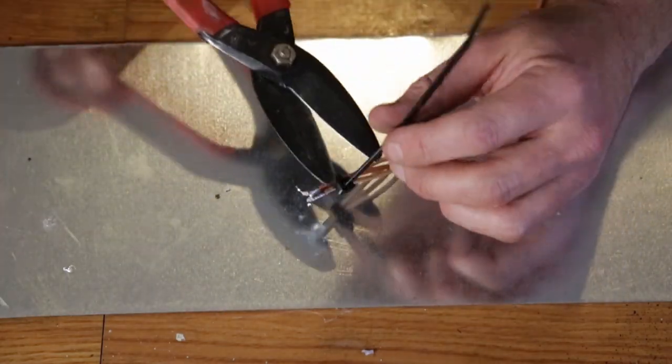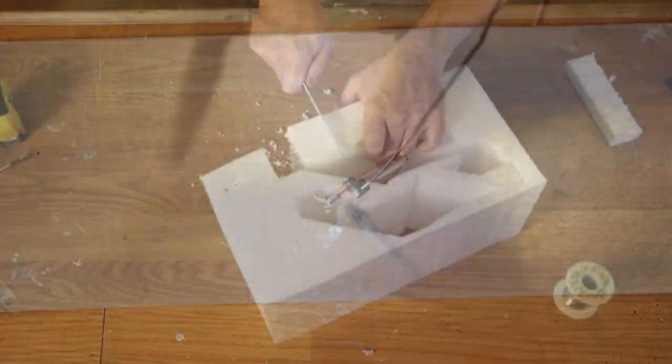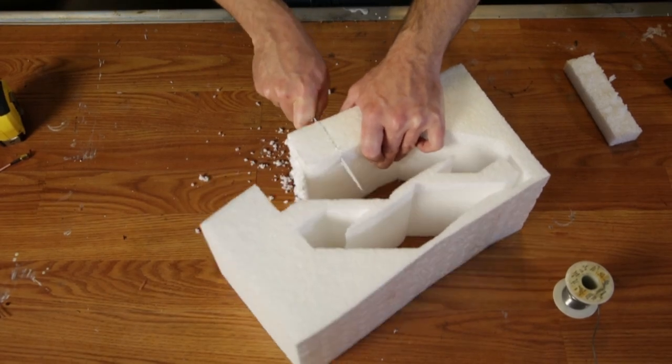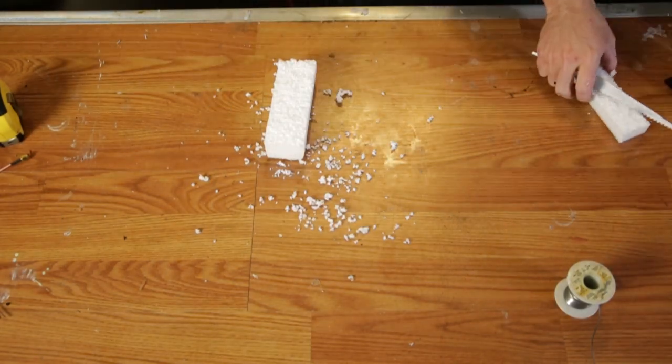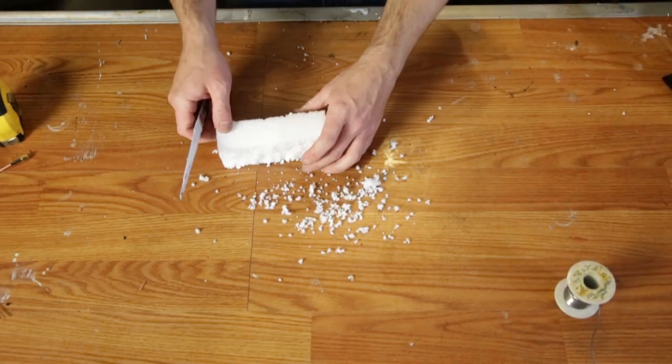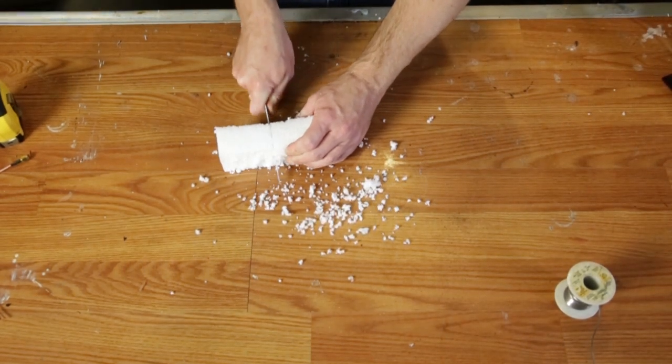Now it's time to cut the element supports. I'm using a piece of scrap styrofoam and a cheap saw blade to cut it down. I would use a long knife, but unfortunately I can't find a good blade, so this will have to do.